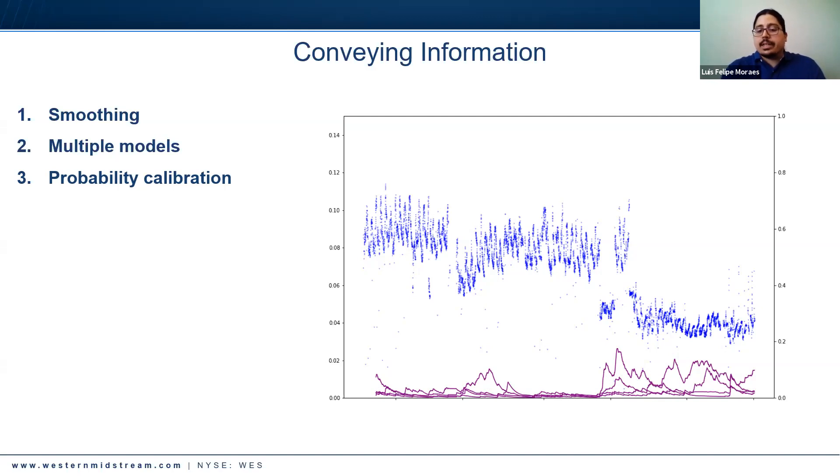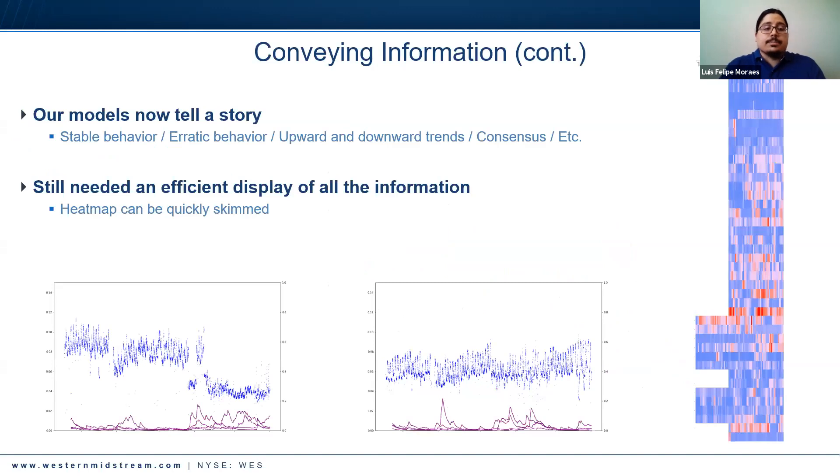If you had multiple models in varying scales, it would be hard to say why should I believe this model over that one. Continuing on this path, our models now tell a story. You can clearly see stable behavior, erratic behavior, upward and downward trends, consensus among the models. All of this helps someone understand what our models are trying to communicate about the data they're looking at. But we still needed an efficient way to display all the information. What we ended up doing was creating a heat map. As you can see here on the right hand side, a heat map can be quickly skimmed - it is ideal for triaging a lot of data.